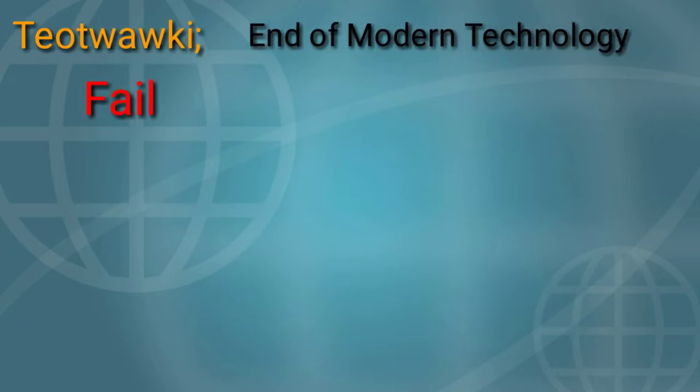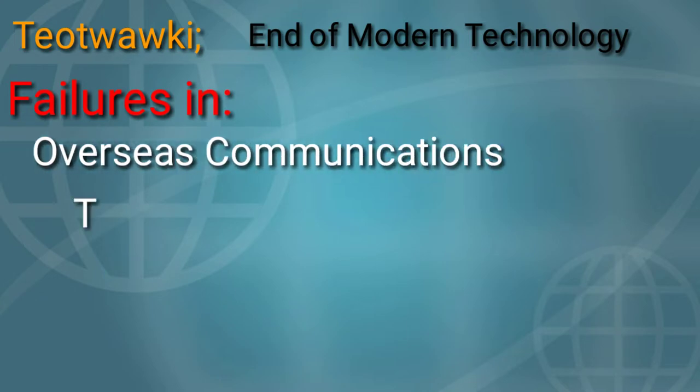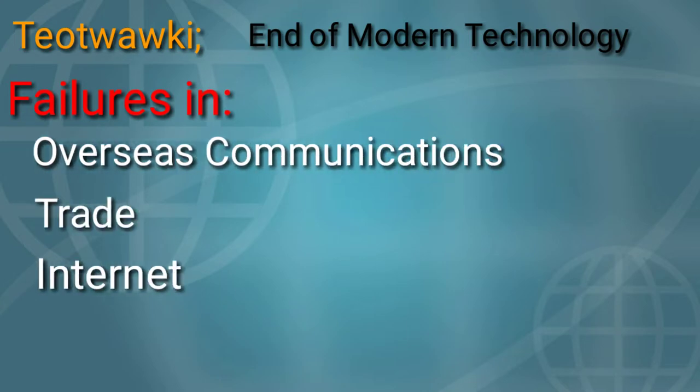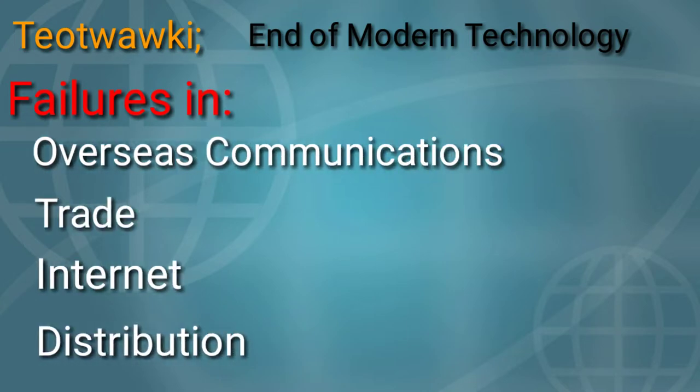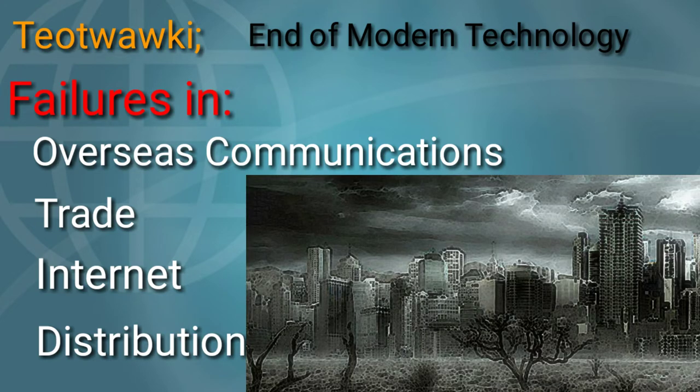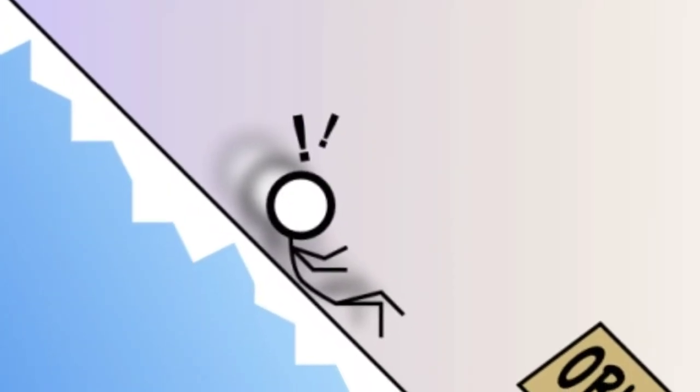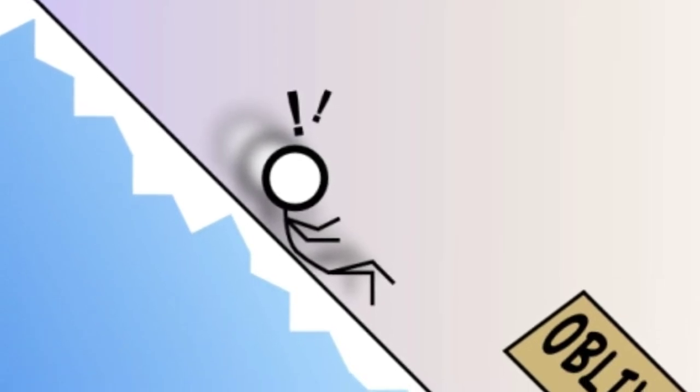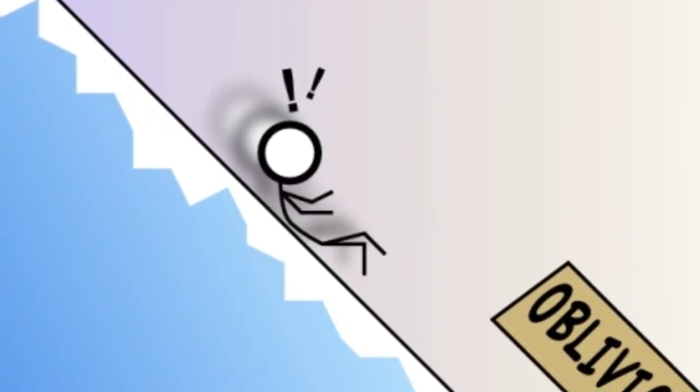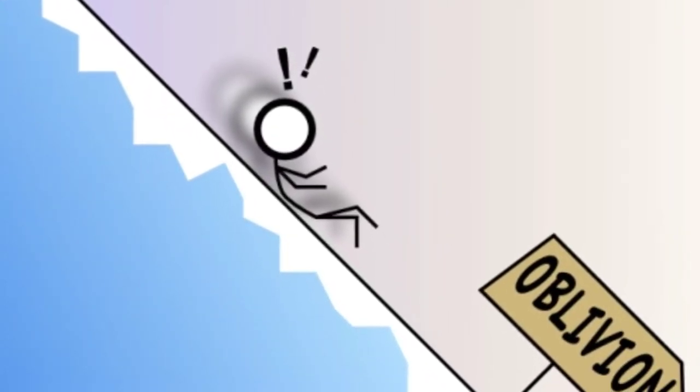In this case, when I say the end of the world as we know it, I mean the end of our modern technology. Failures in systems like overseas communication, trade, the internet, and distribution. In prepping communities, when we talk about this kind of systemic failure, it's often in relation to traumatic events like EMPs, but this situation is one which is ignored for a while until it suddenly becomes a huge problem, and we may be somewhere in the middle of that process right now.